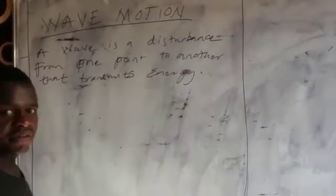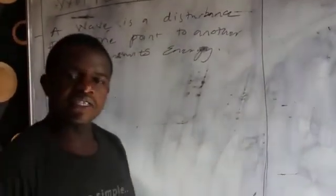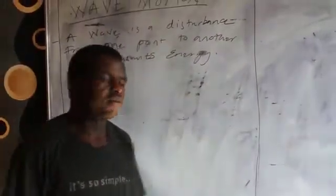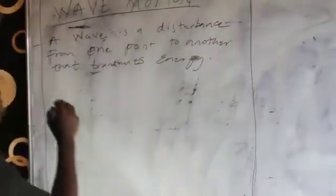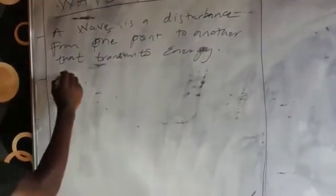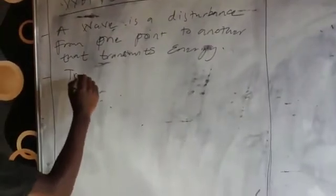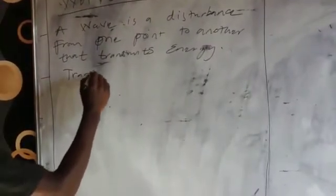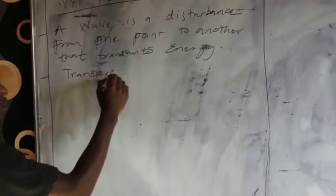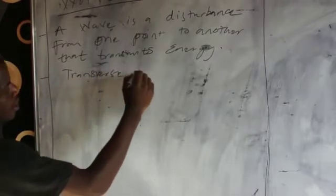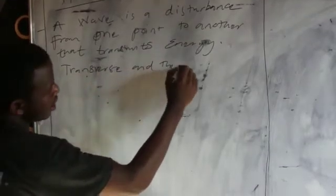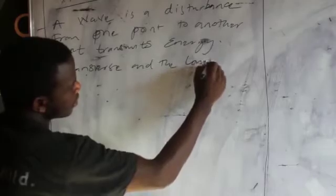There are two types of waves. We have the transverse wave and the longitudinal wave.